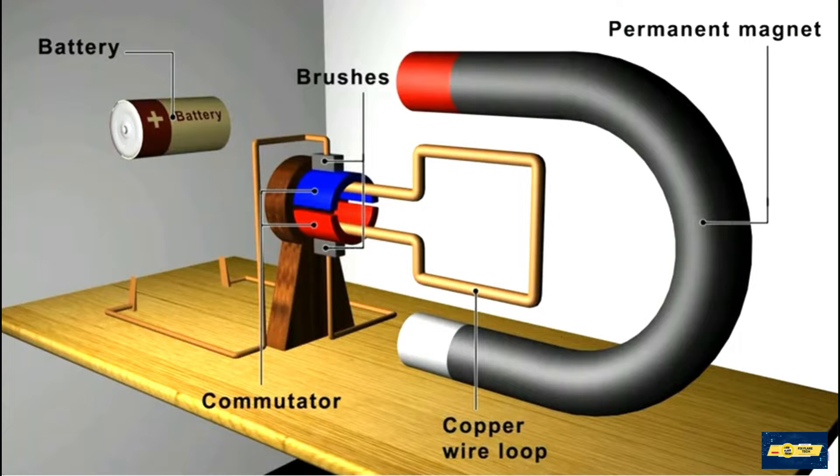This is a very simple and basic structure of an electric motor. We can see the battery, the commutator, the brushes, the copper wire loop, and the permanent magnet.